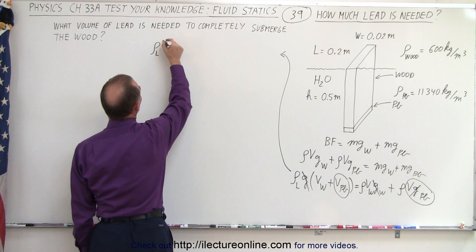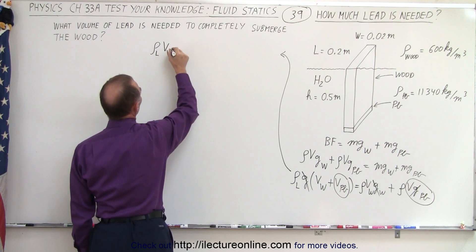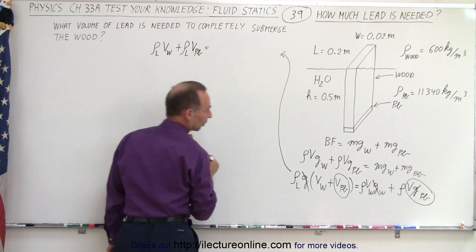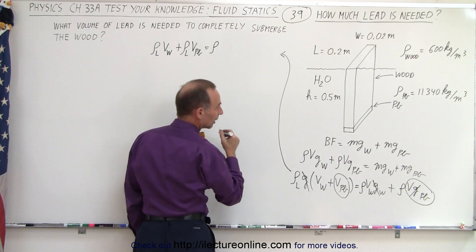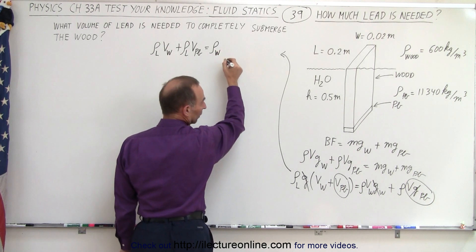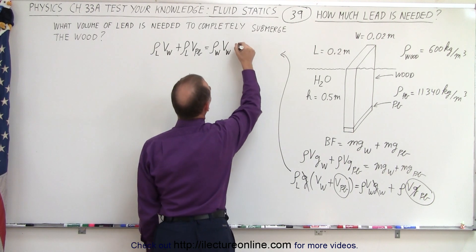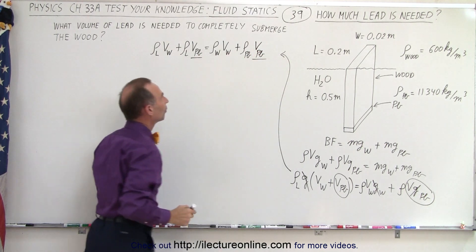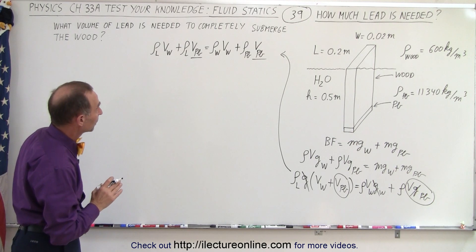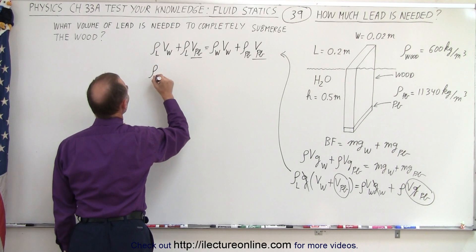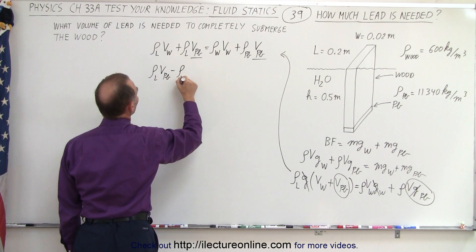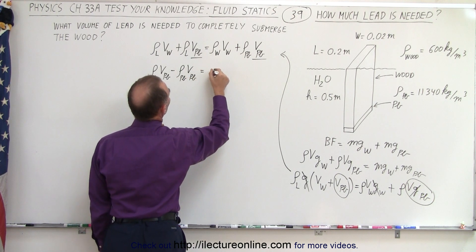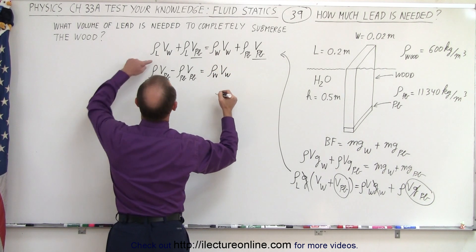Re-expanding, we have the density of the liquid times the volume of the wood plus the density of the liquid times the volume of the lead, and that equals the density of the wood times the volume of the wood — which is all known — plus the density of the lead times the volume of the lead, which is not known. We are solving for the volume of the lead since everything else is known.